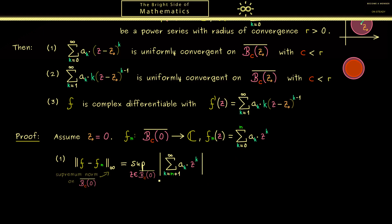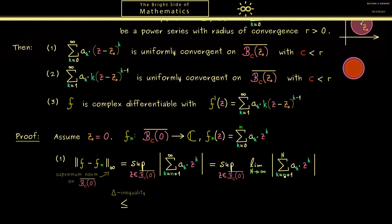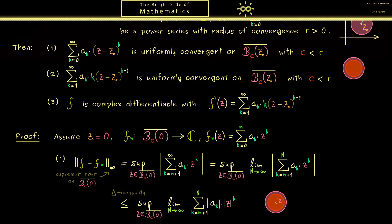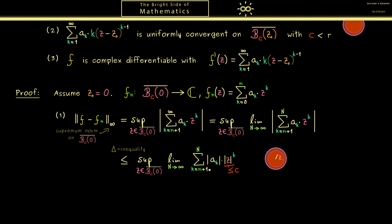We work with the absolute value using the triangle inequality. First we pull the limit out of the absolute value since the absolute value is continuous. Then the triangle inequality gives us the absolute value inside the sum: the absolute value of ak times the absolute value of z to the power k. Since z lies in the closed ball of radius c, the absolute value of z is at most c, so we get a bound. We can drop the supremum and are left with the series of the absolute value of ak times c to the power k.